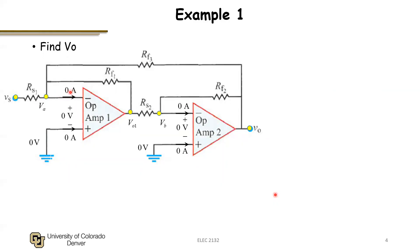Applying op-amp constraints, we label input currents as zero amps on both op-amps and note zero differential voltage across each. For op-amp one, since we have zero differential volts, the constraint says Va minus zero must equal zero volts — therefore Va equals zero volts. This eliminates one degree of freedom. We do the same for op-amp two: Vb minus zero equals zero, so Vb equals zero volts. The inverting pins of the op-amps are constrained to zero volts by the op-amp — not because they're connected to the reference node, but because of the op-amp itself. That's very important to understand.